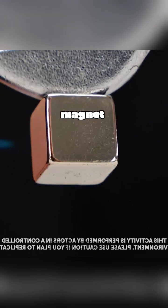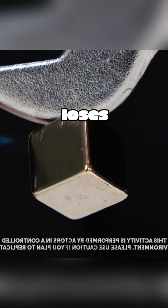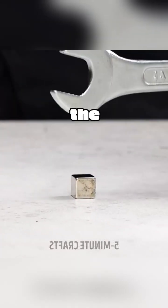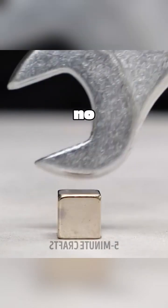But when we use a lighter to heat the magnet, the magnet quickly loses its magnetism and falls off. When we bring the wrench close to the magnet again, the magnet has no reaction at all.